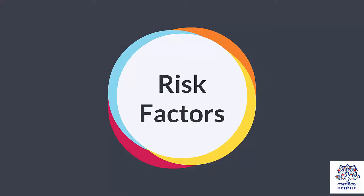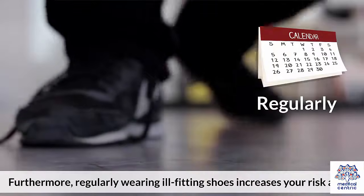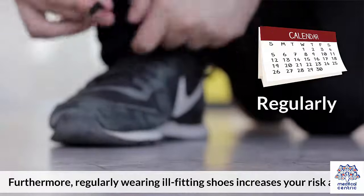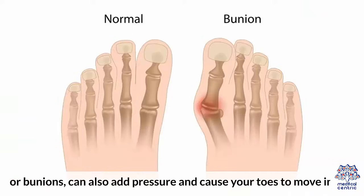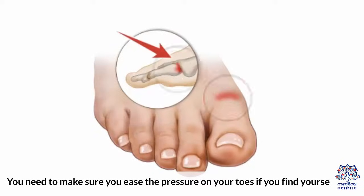Risk Factors. The risk of a hammer toe increases if you have a family history of the condition. Furthermore, regularly wearing ill-fitting shoes increases your risk as well. Thickened skin due to calluses, corns, or bunions can also add pressure and cause your toes to move inward. You need to make sure you ease the pressure on your toes if you find yourself at risk.